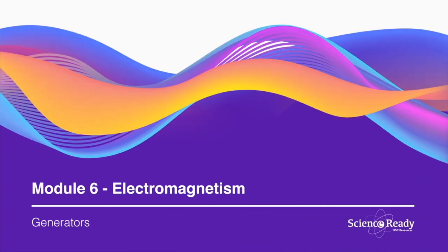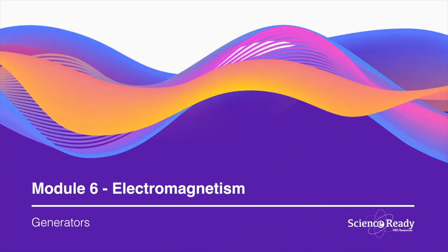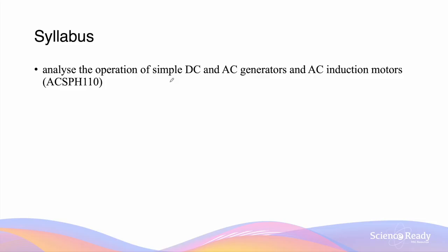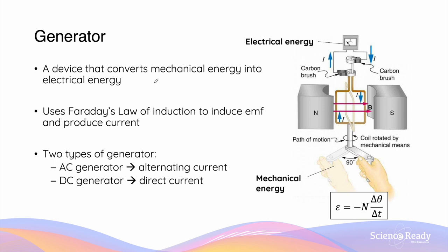Hey everyone, this video is on generators. A generator is a device that converts mechanical energy into electrical energy. This energy transformation is the opposite to that of a motor. A generator uses Faraday's law of induction to induce EMF and produce electrical energy in the form of current.